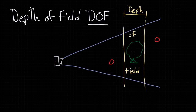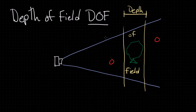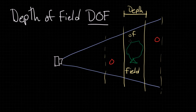We want to know how we can control it. Can we make this deeper or shallower? In other words, what if we wanted to make it a deeper depth of field, meaning we wanted to include the apples, or make it shallower so maybe we only have part of the tree in focus and leave the rest of it out of focus.